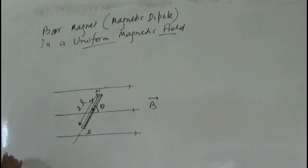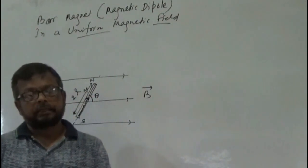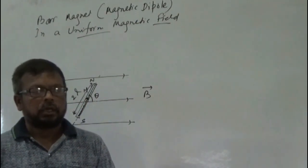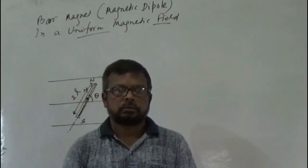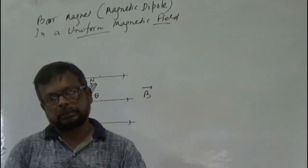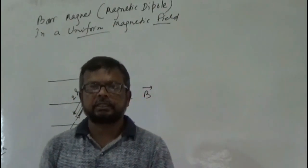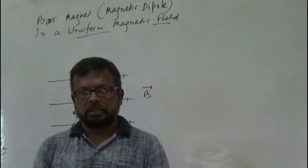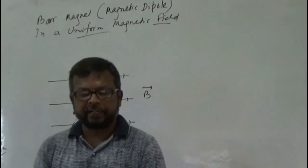We have already said that there is a magnetic field surrounding a magnet, and whether that field is strong or weak, we know from our concept of magnetic field lines. If the magnetic field lines are concentrated, then you can say there is a strong magnetic field. If the magnetic field lines are spaced apart, then you can say that the magnetic field is weak.